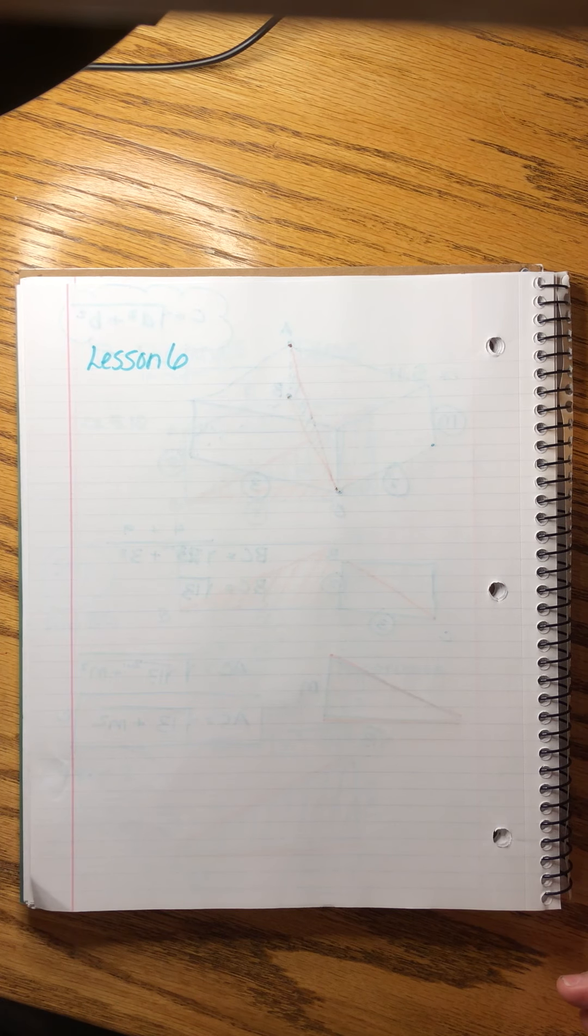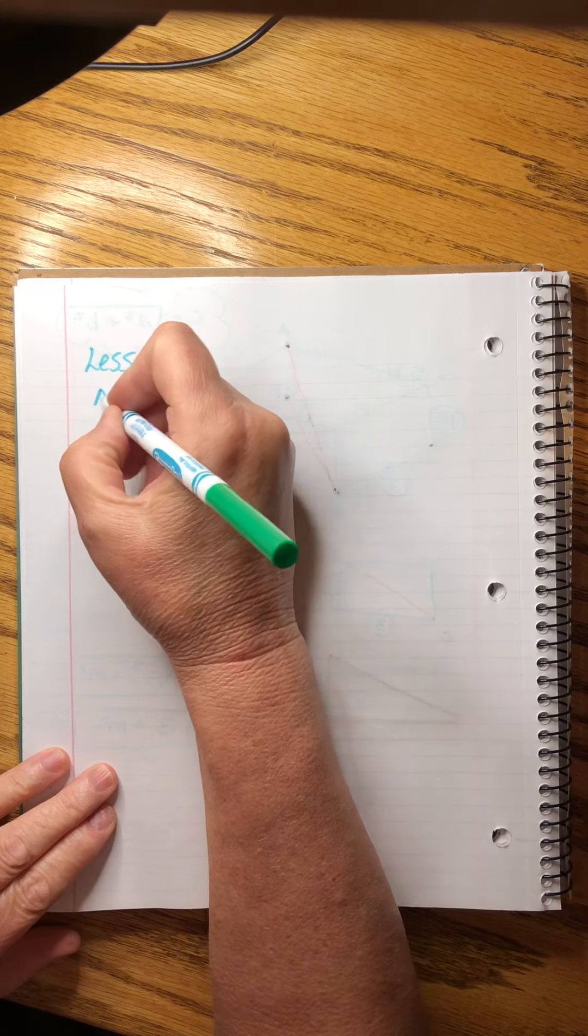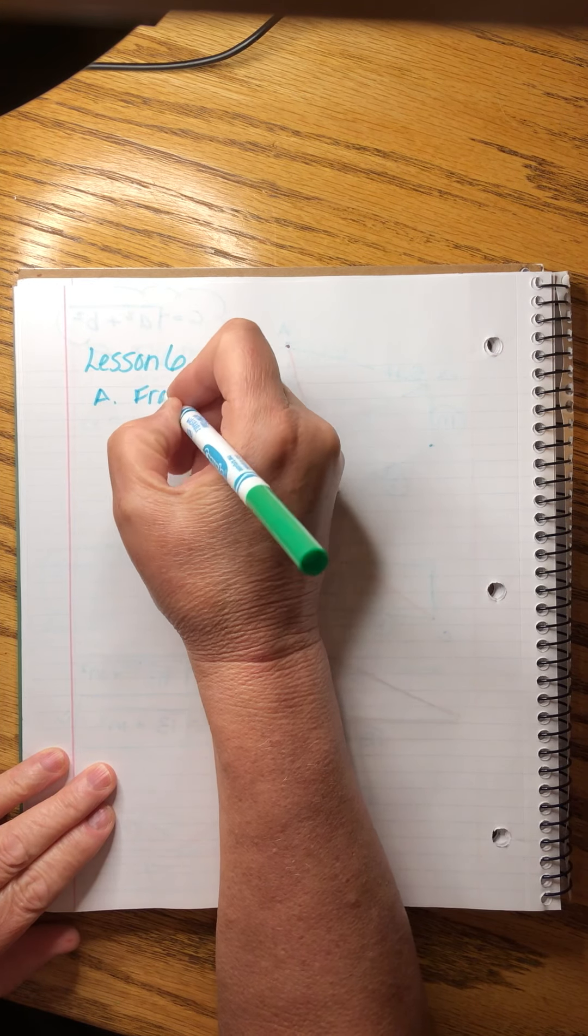Saxon Advanced Mathematics, Lesson 6. We have three different topics. They all have to do with equations. This is all algebra-focused. The first topic is fractional equations.